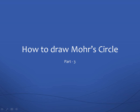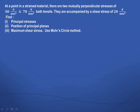Let us try to understand how to draw Mohr's circle. At a point in a strained material there are two mutually perpendicular stresses of 30 N/mm² and 70 N/mm², both tensile, accompanied by a shear stress of 20 N/mm². We have to find the principal stresses — major and minor — the position of the principal planes, and the maximum shear stress using the Mohr's circle method.